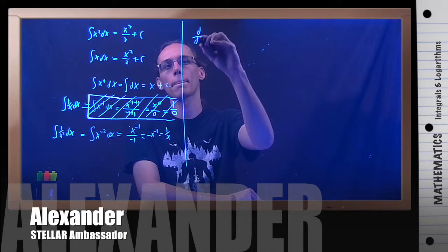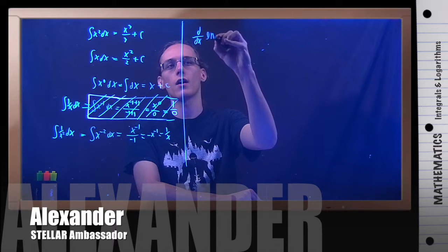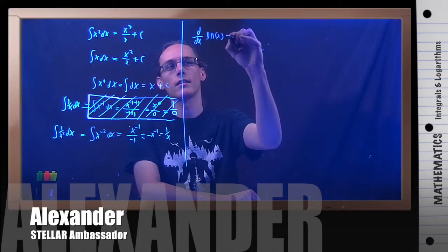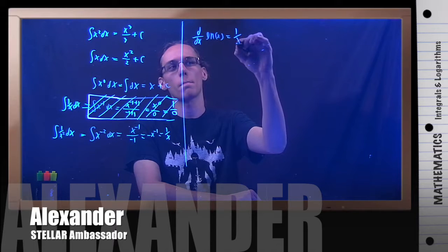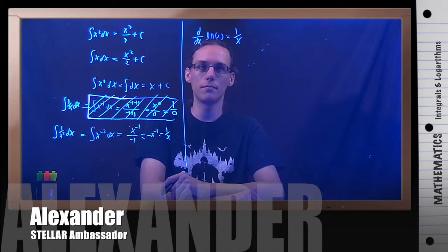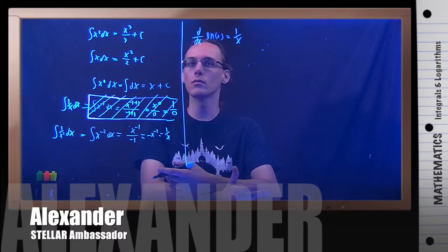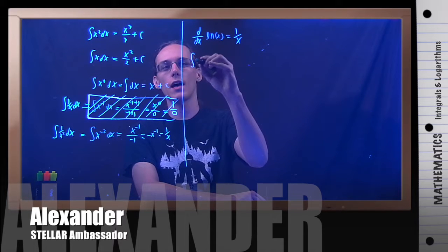But let's say you're just given that the derivative, which is this true by the way, the derivative of natural log of x is 1 over x. Well, the opposite of a derivative is an integral. So if I integrate both sides,